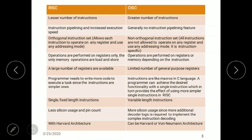RISC will have less silicon usage and pin count, whereas CISC will have more silicon usage since additional decoder logic is required to implement complex instruction decoding. RISC mainly uses Harvard architecture, whereas CISC can be Harvard or Von Neumann architecture. Now let's see the difference between Harvard and Von Neumann architecture.